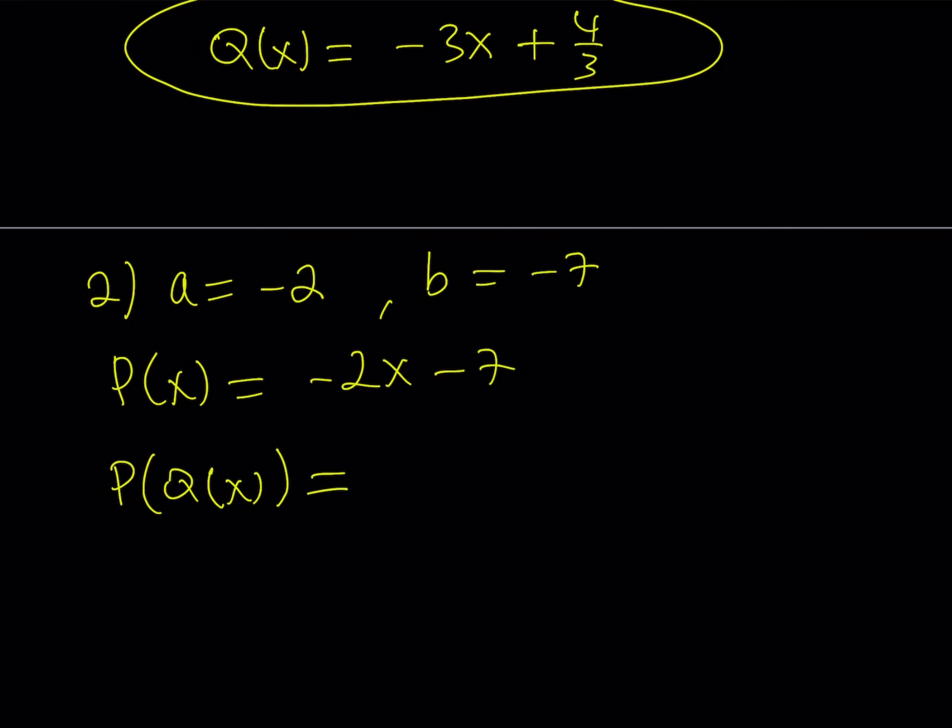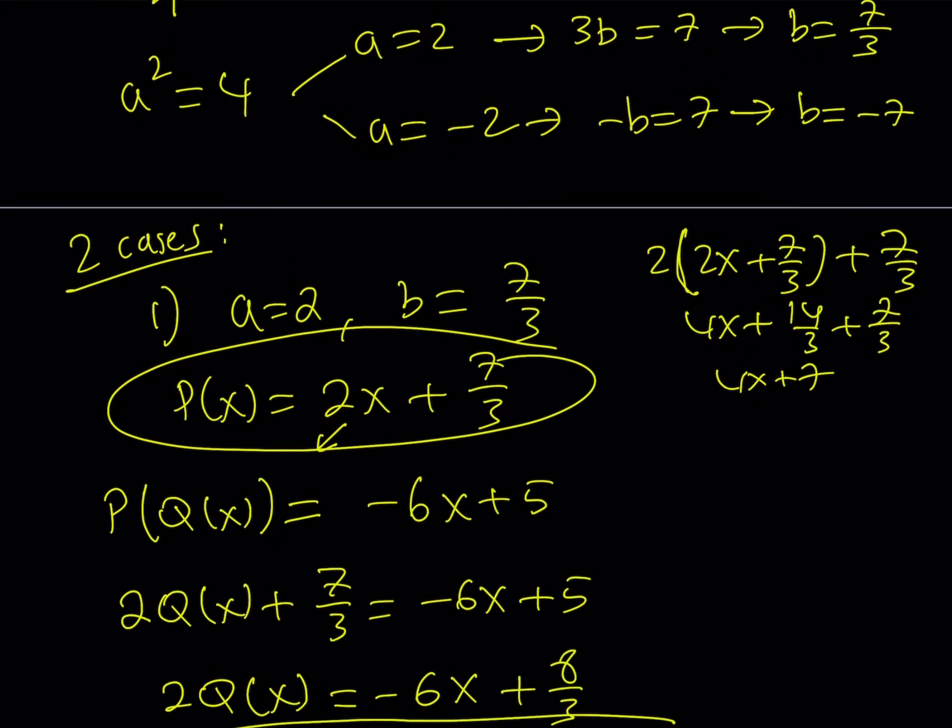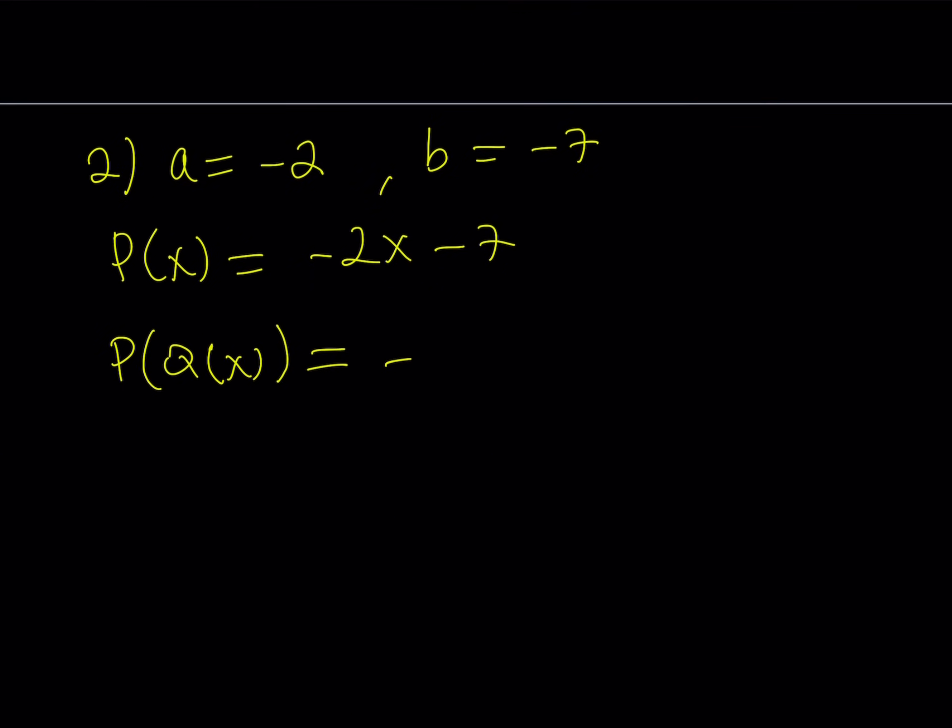Now I want to use my Q of X equation again one more time. P of Q of X is given to be equal to negative 6X plus 5. So now I'm going to replace the X here with Q of X, and on the right-hand side as well, so it's going to give me negative 2 times Q of X minus 7 equals negative 6X plus 5. Again, this solution avoids the assumption that Q of X equals MX plus N, but it's pretty much the same thing.